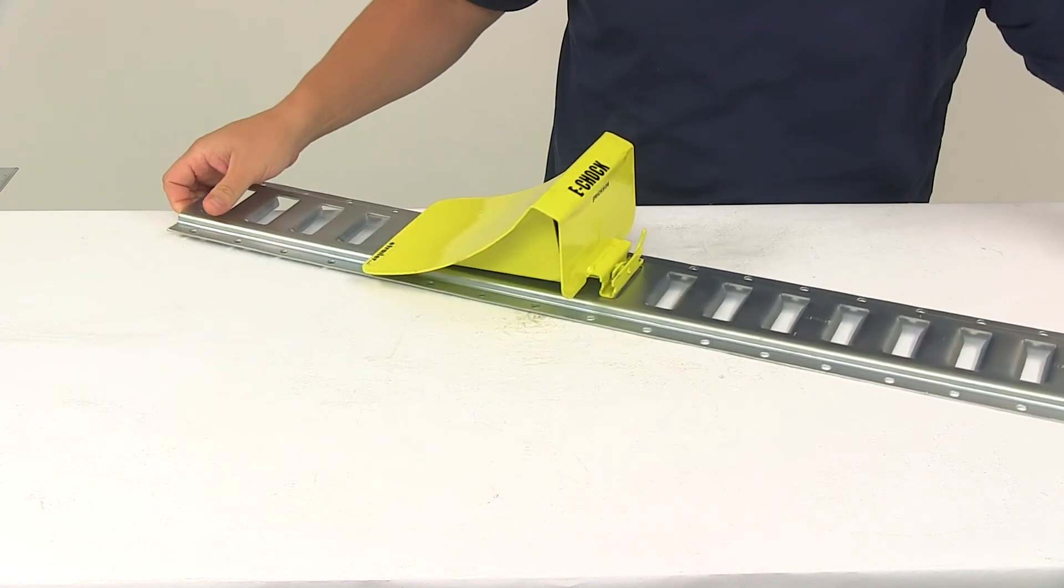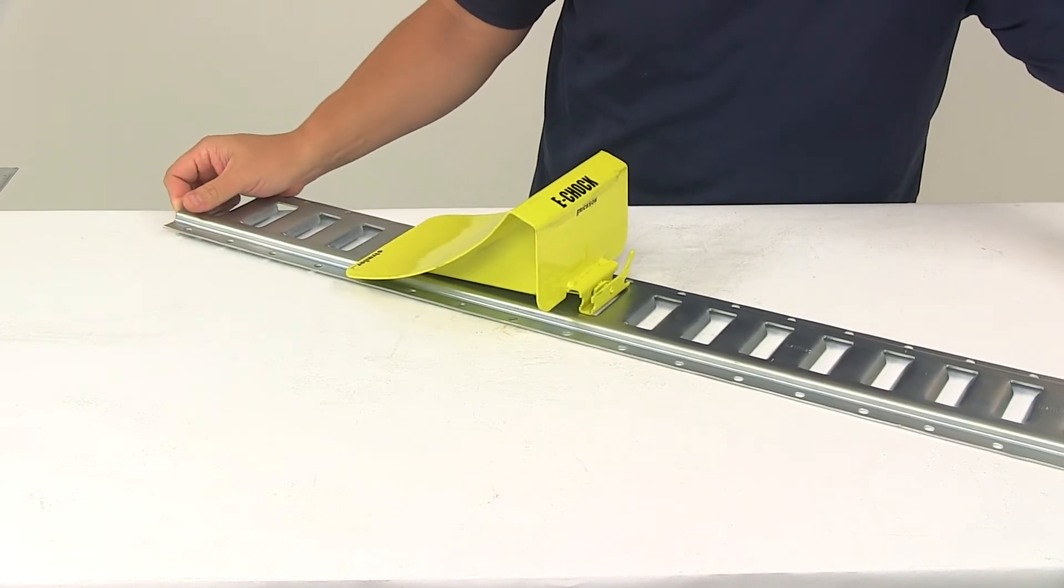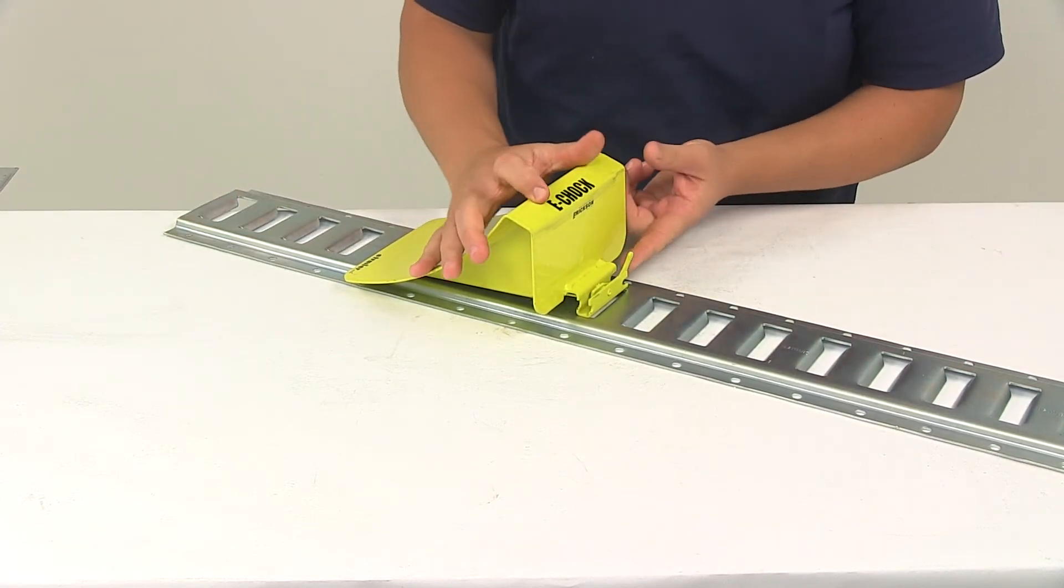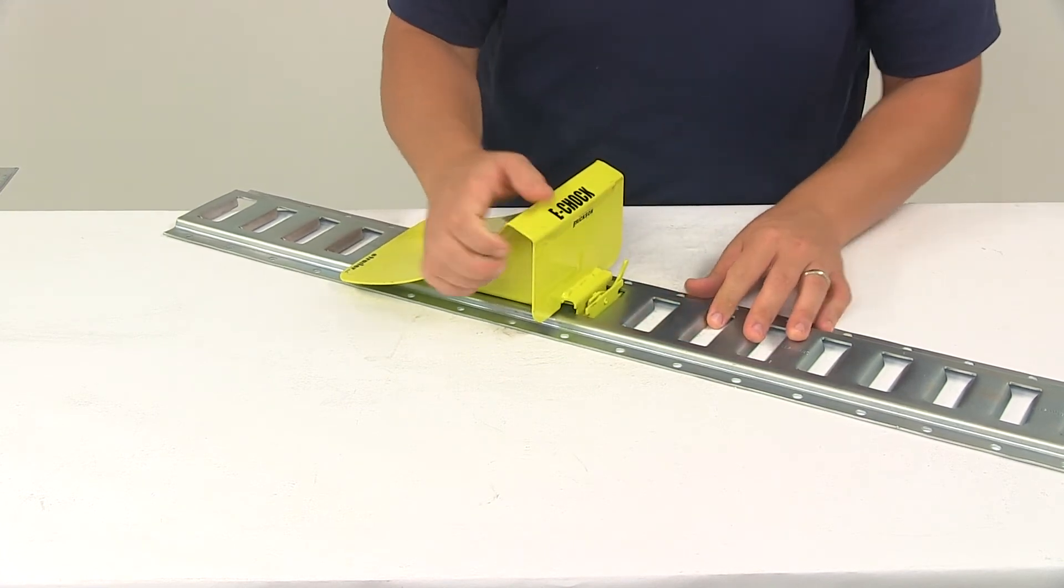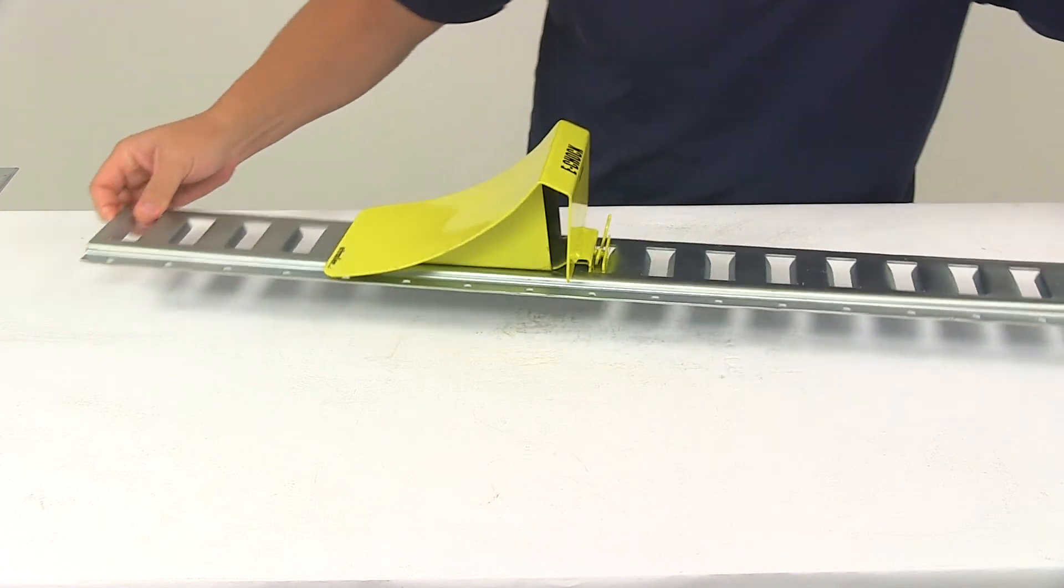And then here on the back side, it has the spring-loaded lever to secure the chalk to an E-Track anchor slot. So you lift that up, rotate it in, it snaps into place for a nice, strong, secure hold.